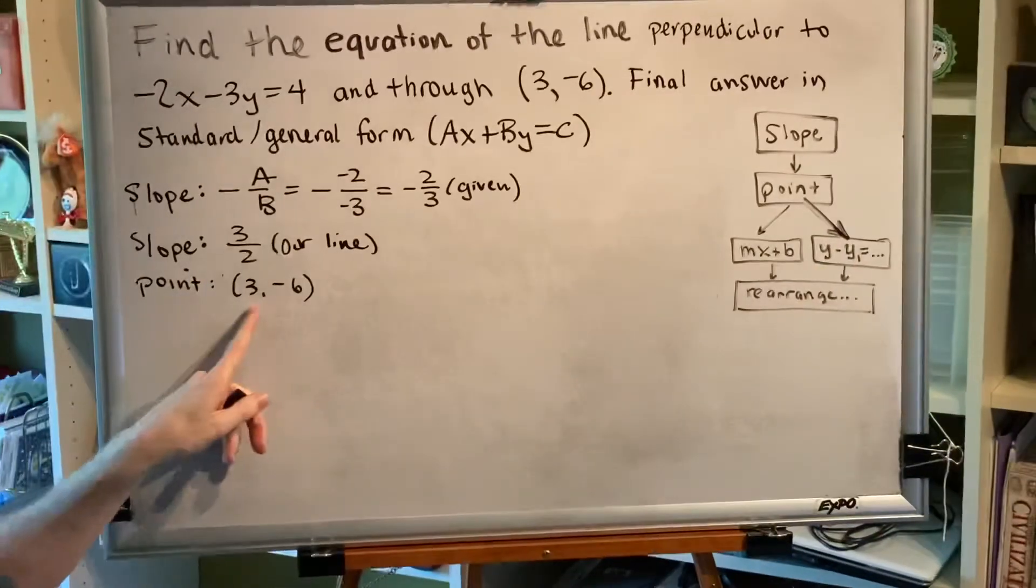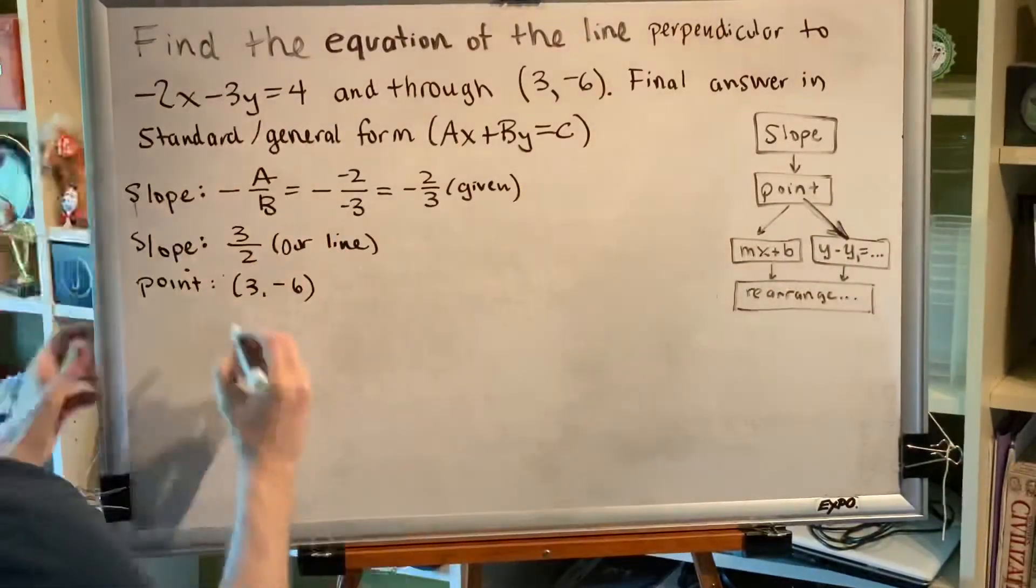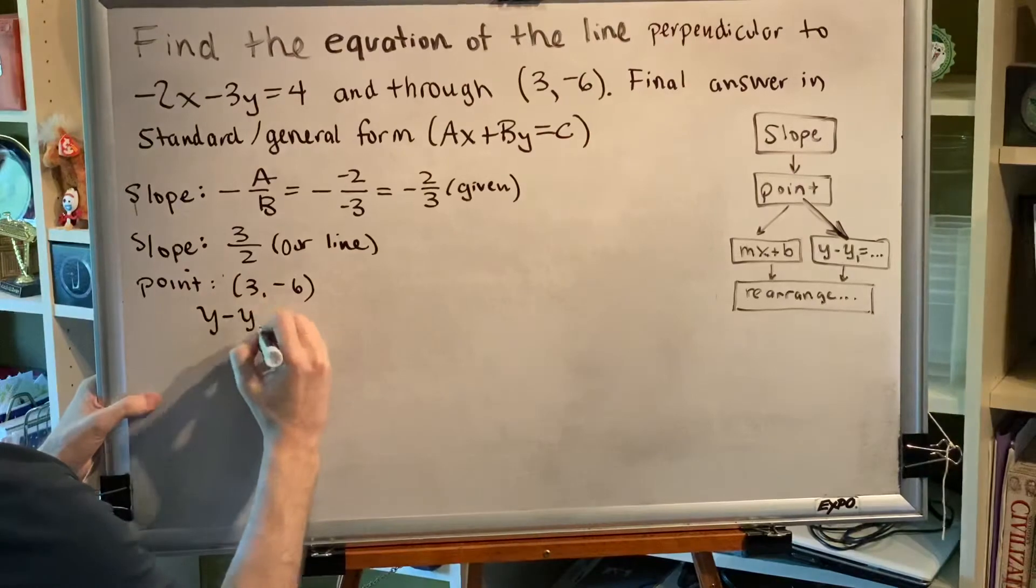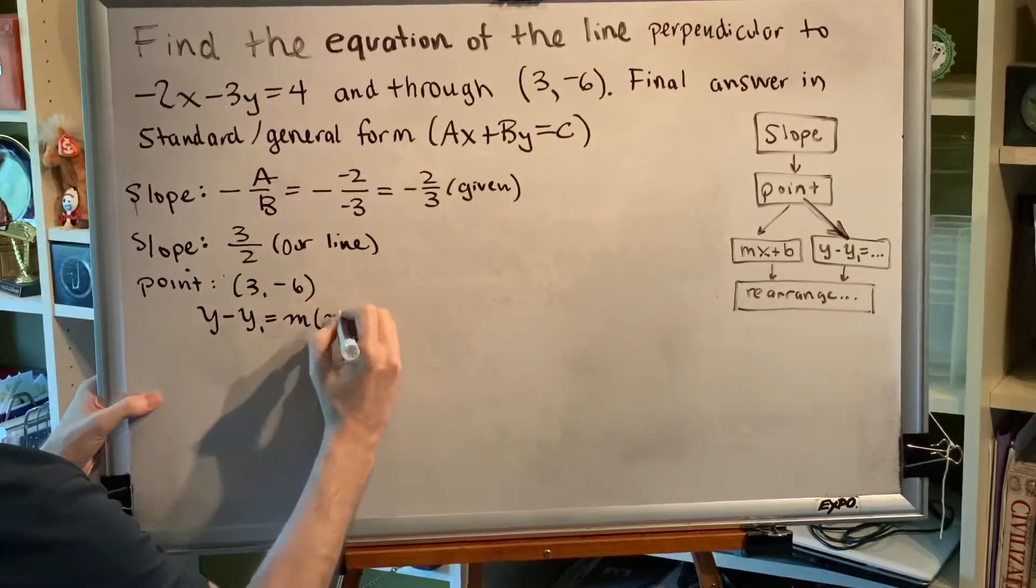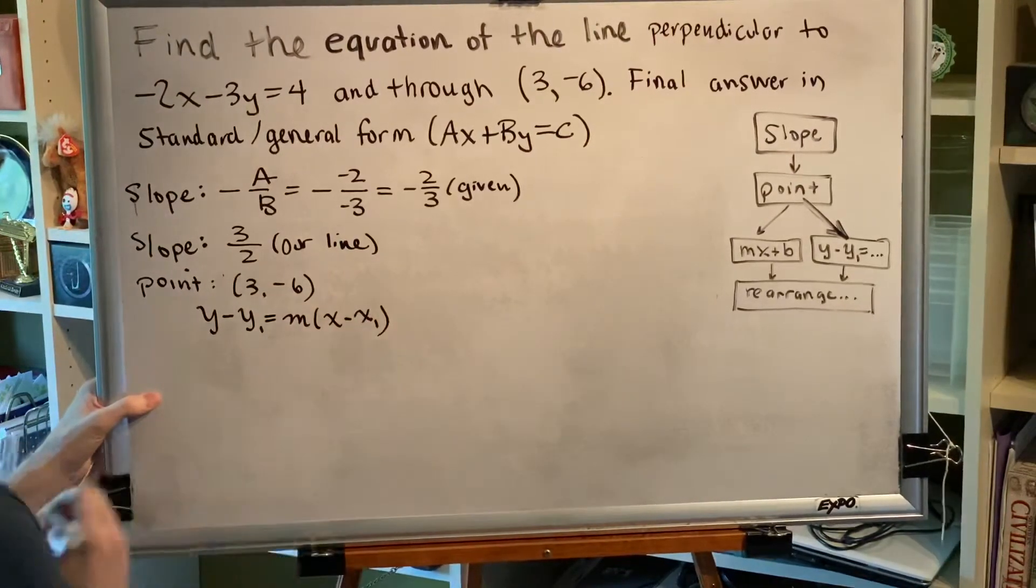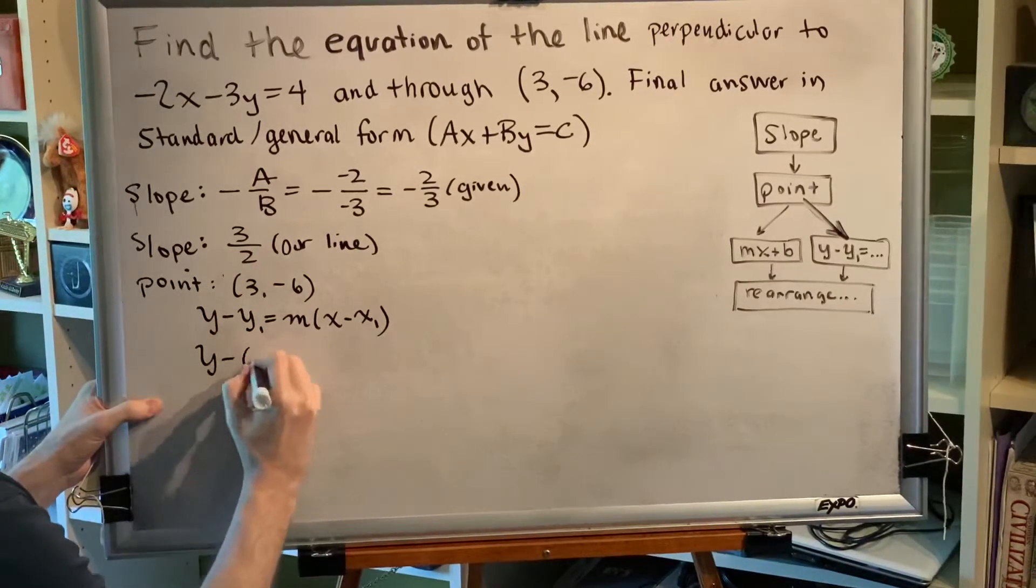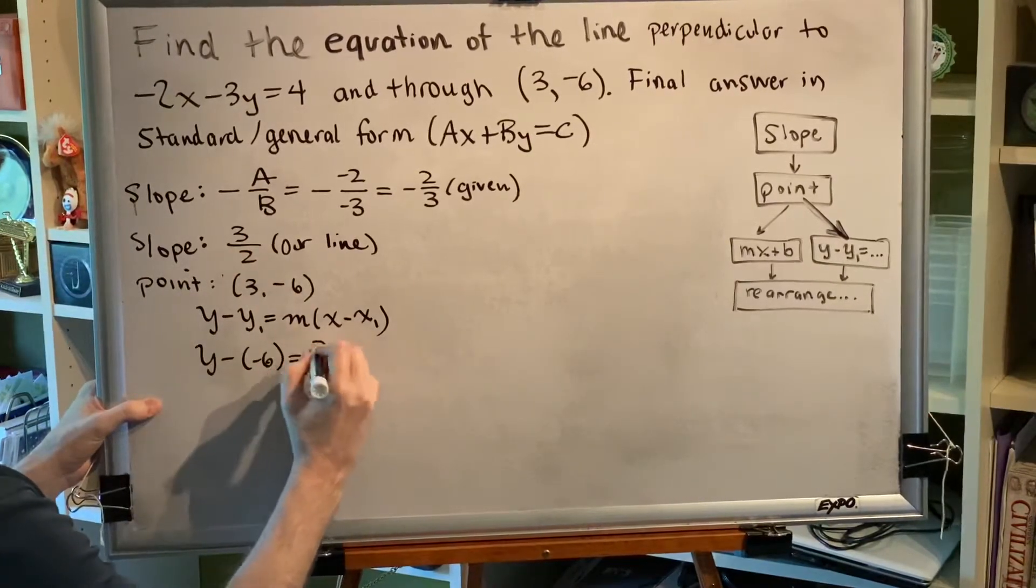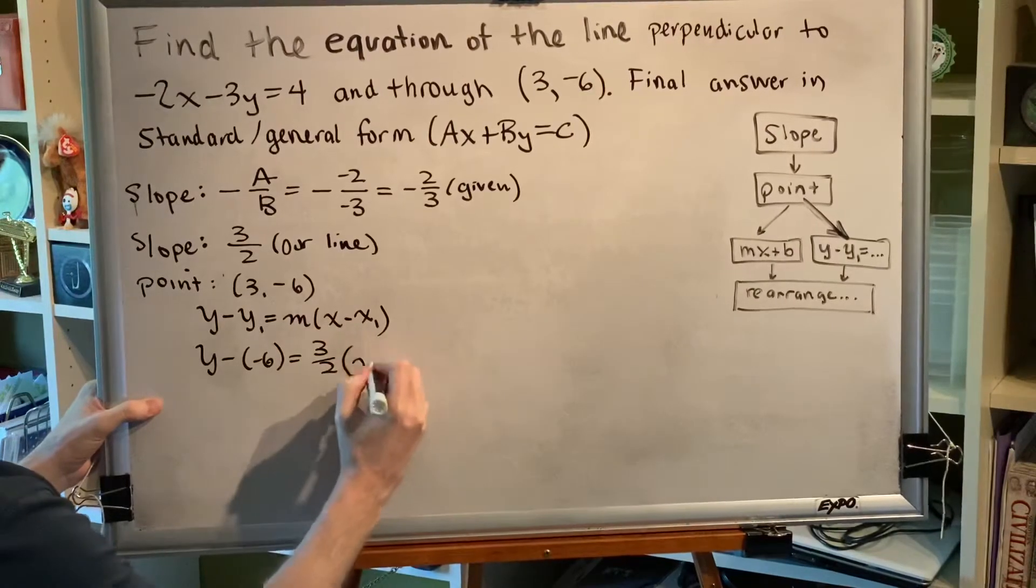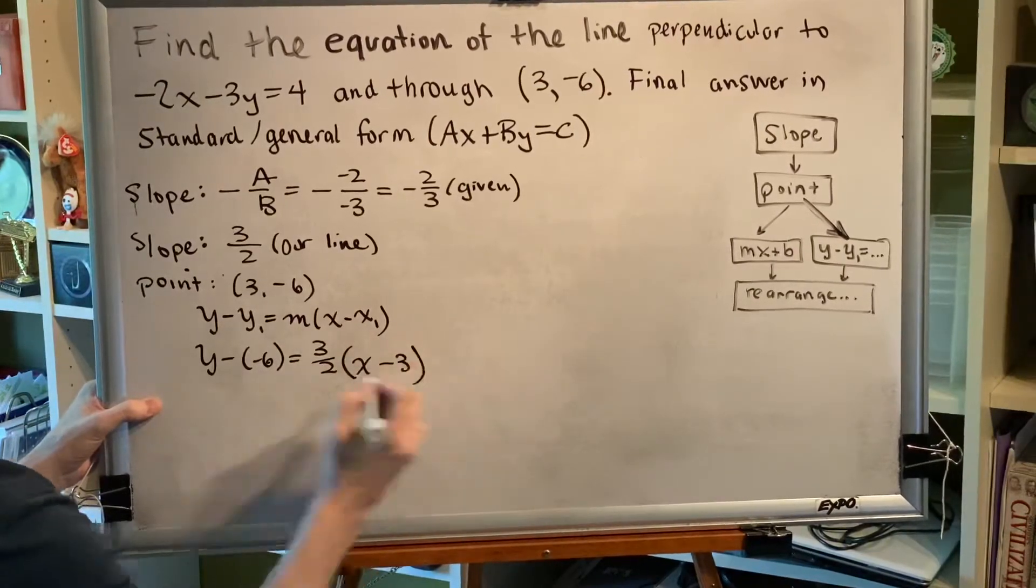Pick a path. Our x coordinate is not 0 so we take the path to the right which is the point-slope formula and we plug in our slope and our point. So we get y - (-6) = 3/2(x - 3).